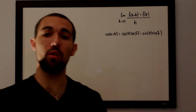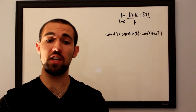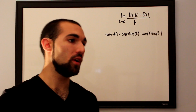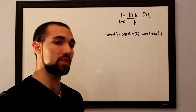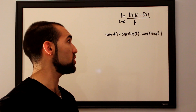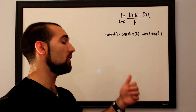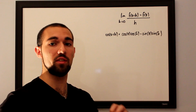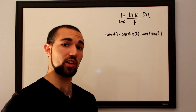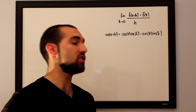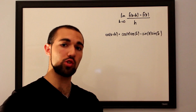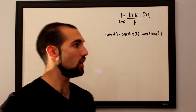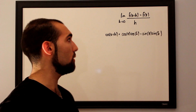We want to take the derivative of the function secant of x using the limit definition of the derivative. The limit definition of the derivative says that you can take the derivative of a function by taking the limit as h approaches 0 for f of x plus an infinitely small increase in x, denoted by h, subtract off your initial function and divide that entire thing by h.